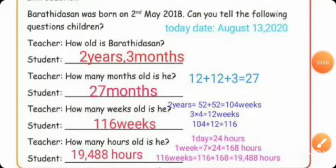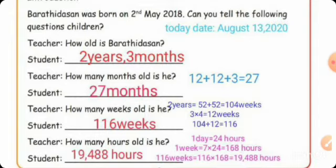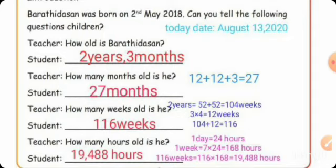Baruthi was born on 2nd May 2018. Today's date is August 13, 2020. How old is Baruthi? He was born in 2018 and the current year is 2020, so that is 2 years. His birth month is May and the current month is August — 3 months between them. So Baruthi is 2 years and 3 months old. How many months old is he? One year equals 12 months, so 2 years equals 24 months, plus 3 months equals 27 months old.